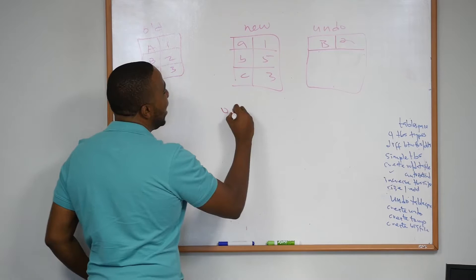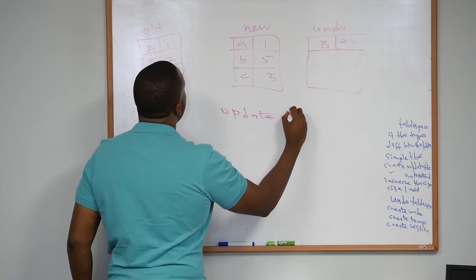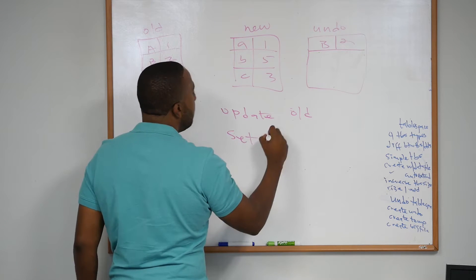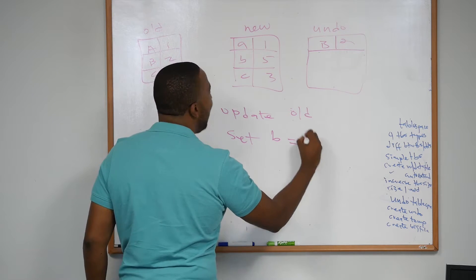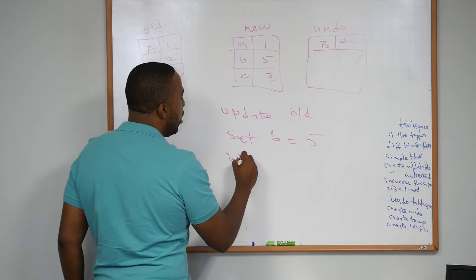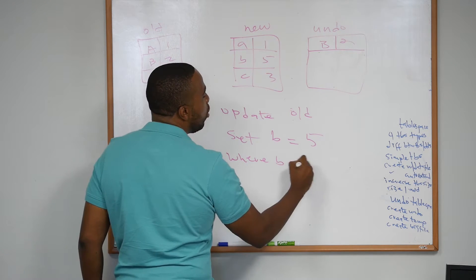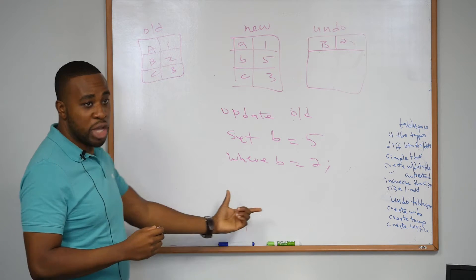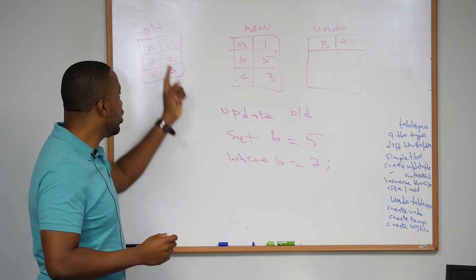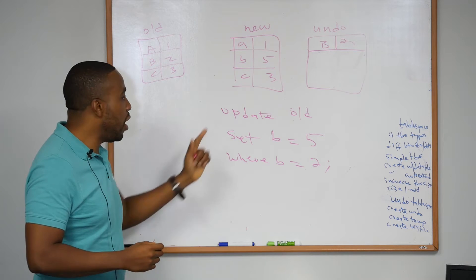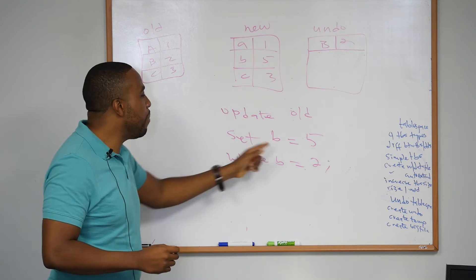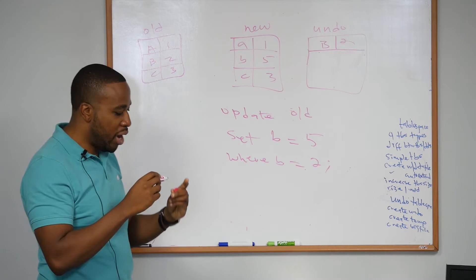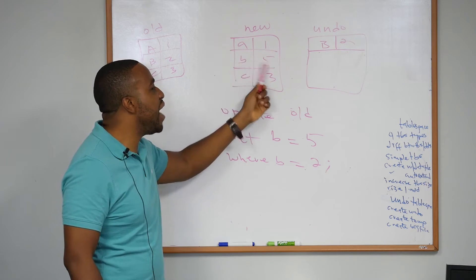read like this: UPDATE OLD SET B = 5 WHERE B = 2. That's the name of the table. I want to change 2 to 5, so update the OLD table, set column B to equal 5 where B equals 2. Make sense? So now the new table is going to look like A1, B5, C3. But it is not permanently changed yet because you haven't issued a commit.